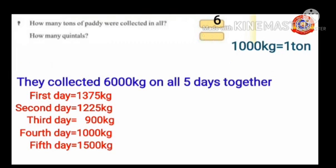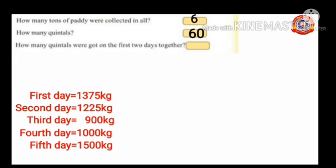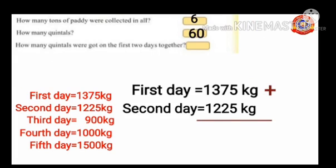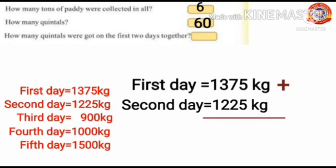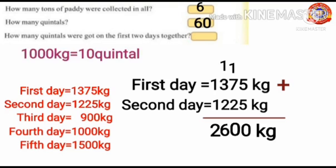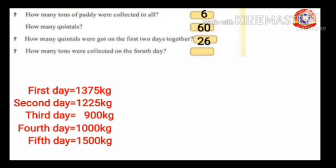Next question: how many quintals were got on the first two days together? Add the weight of paddy for the first two days: 1375 kg and 1225 kg. 5+5=10, write 0 carry 1; 7+2+1=10, write 0 carry 1; 3+2+1=6; 1+1=2. Total is 2600 kilograms. We know 1000 kg equals 10 quintals, so 2600 kg equals 26 quintals.